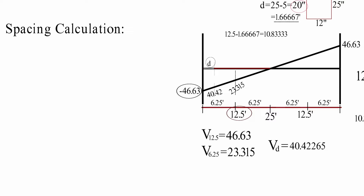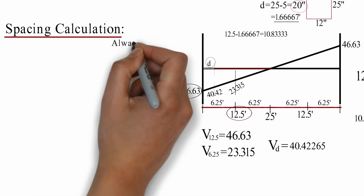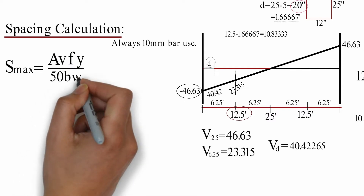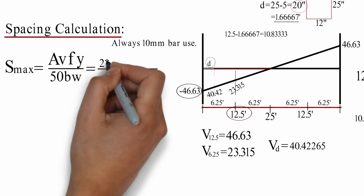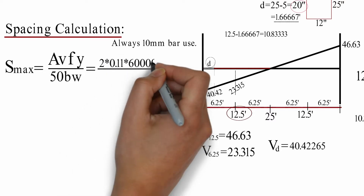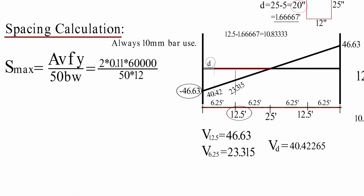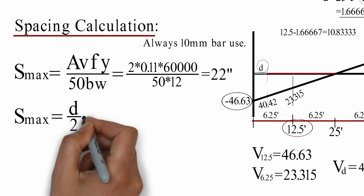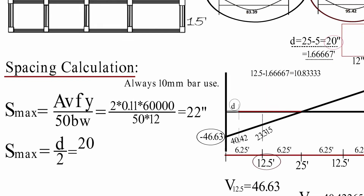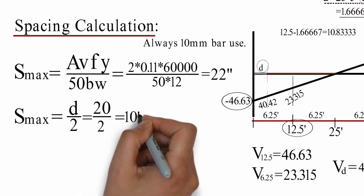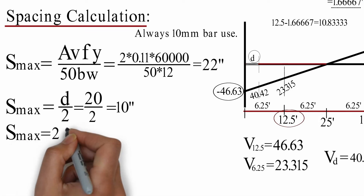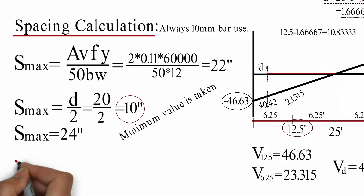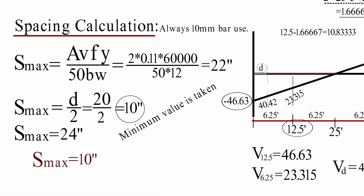Spacing. All is 10 millimeter bar. S_max equals A_v times f_y divided by (0.75 times b_w), and also 2 times steel area times 100,000 times f_y divided by (0.75 times b_w). S_max equals 24 inches. Take the minimum value. S_max equals 10 inches. Share calculation.